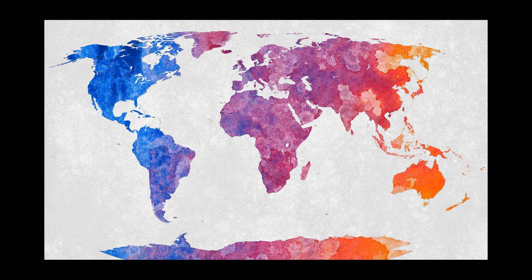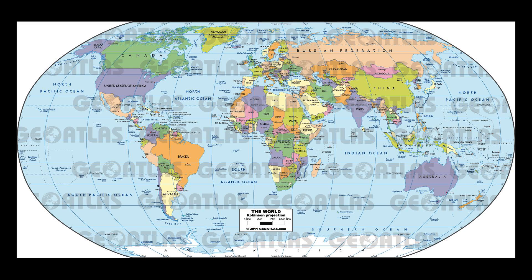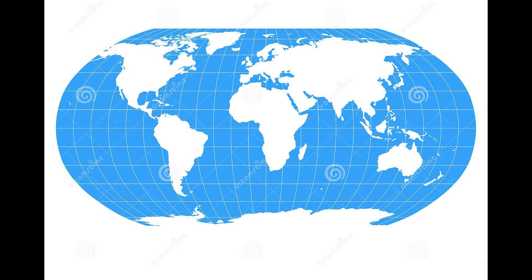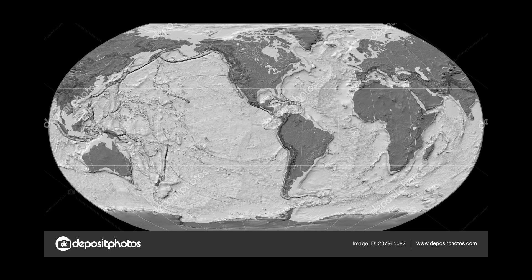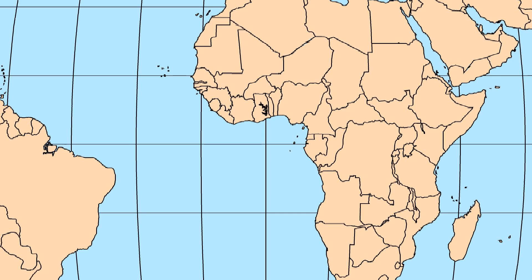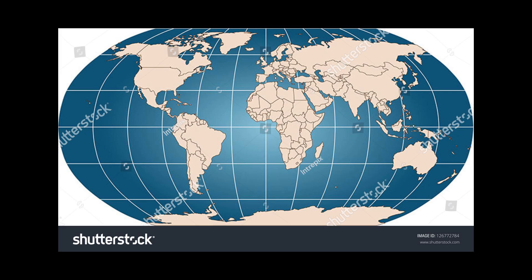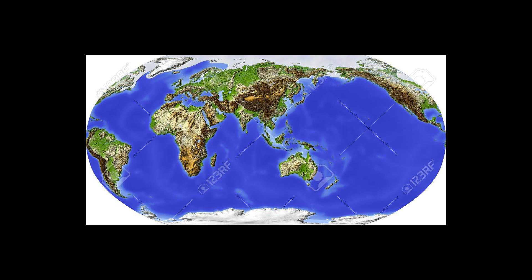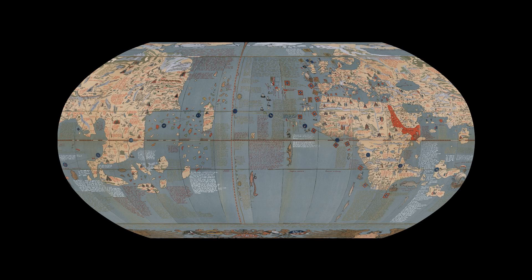Strengths and Weaknesses: The Robinson Projection is neither equal area nor conformal, abandoning both for a compromise. The creator felt this produced a better overall view than could be achieved by adhering to either. The meridians curve gently, avoiding extremes, but thereby stretch the poles into long lines instead of leaving them as points. Hence, distortion close to the poles is severe, but quickly declines to moderate levels moving away from them.